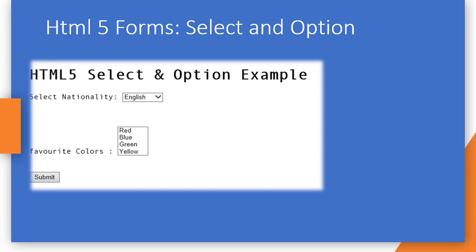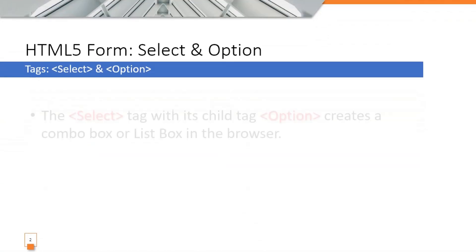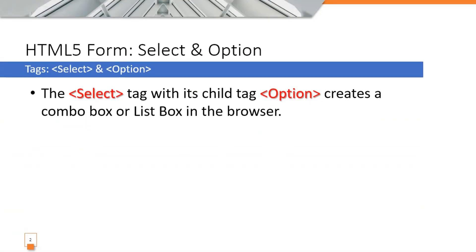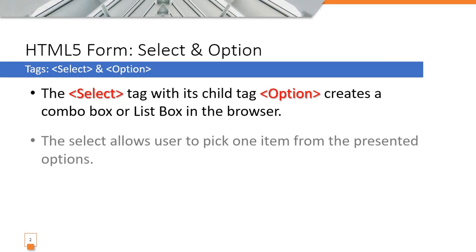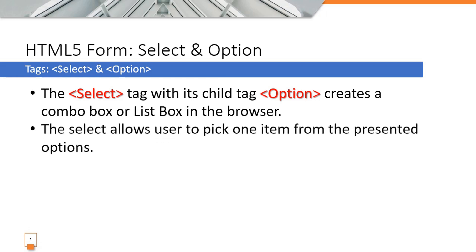In this video we are going to look at select and options in HTML5. The select tag, with its child option tags, creates a combo box or list box in the browser. There will be one select tag and it may contain multiple option tags.